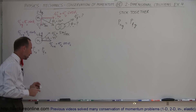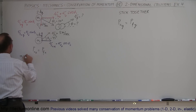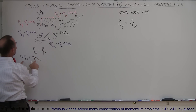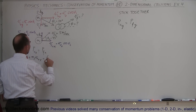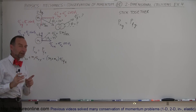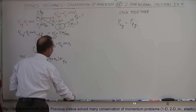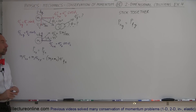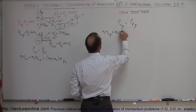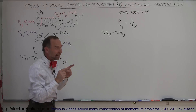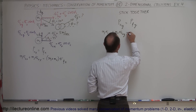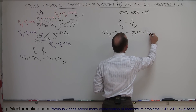We can now write the equations. For x: M1 times v1 initial in the x direction plus M2 times v2 initial in the x direction equals M1 plus M2 times v final in the x direction, since they stick together and share a common final velocity. For y: M1 times v1 initial in the y direction plus M2 times v2 initial in the y direction equals M1 plus M2 times v final in the y direction. We don't worry about signs yet — those come when we plug in the numbers.